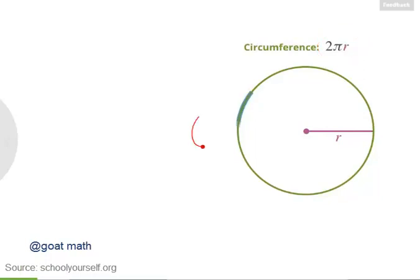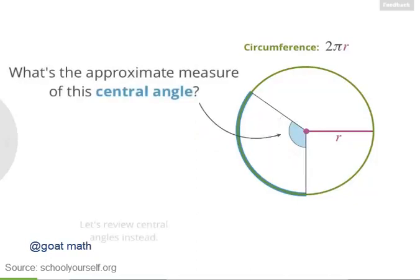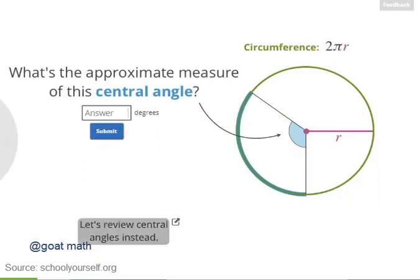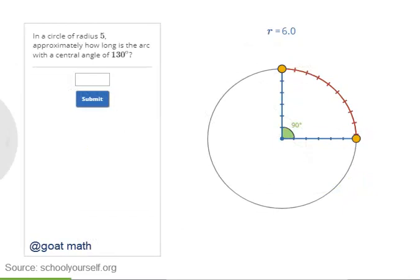Next, let's look at an arc on this circle and draw in the central angle for this arc. What would you estimate is the measure of this central angle? In this lesson, you'll be calculating the lengths of arcs. We'll start by estimating.